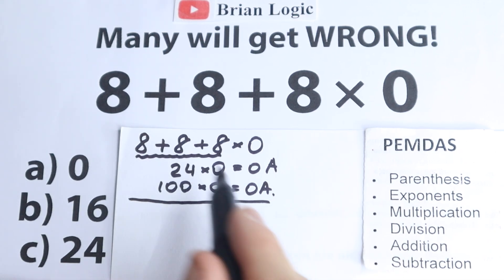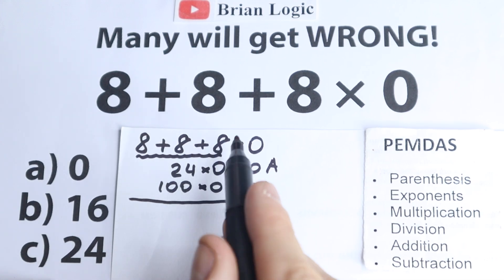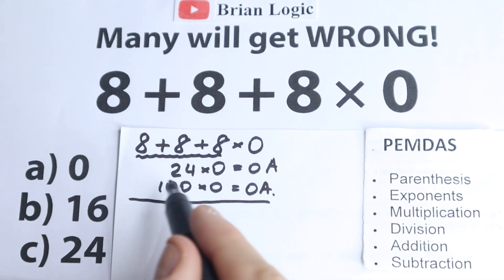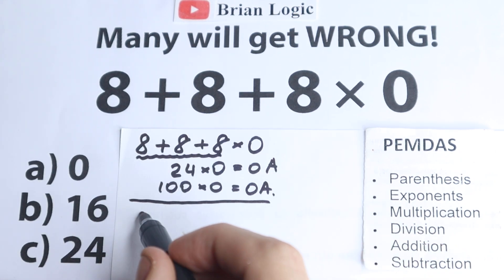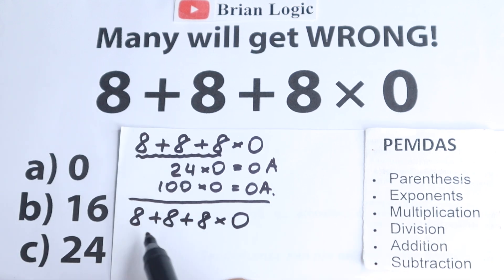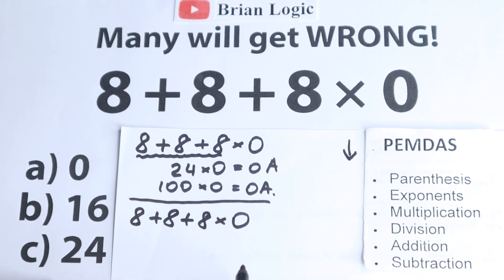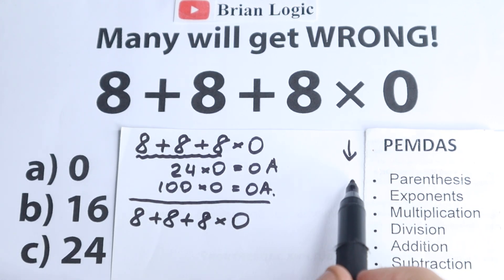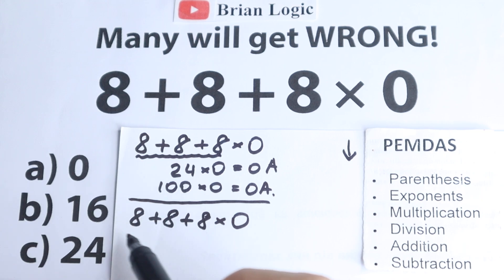Maybe we'll get 0 — it looks like the obvious answer is 0, but let's check. We have 8 plus 8 plus 8 times 0. This order of operations goes from top to bottom, so let's go through the steps. Parentheses — do we have any? I don't see any parentheses, so we skip that step. Exponents — any cubes or squares? No, we don't have any exponents either, so we skip that as well.